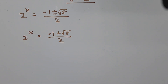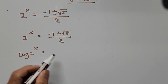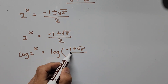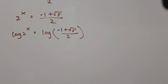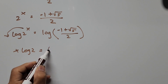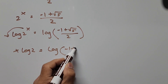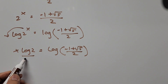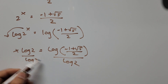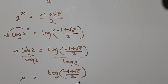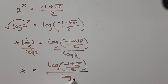To solve for x, take the log on both sides: log of 2 to the power of x equals log of negative 1 plus the square root of 5, divided by 2. Bringing x down as a coefficient, x times log of 2 equals log of negative 1 plus the square root of 5 divided by 2. Isolating x by dividing by log of 2, x equals log of negative 1 plus the square root of 5 divided by 2, all divided by log of 2.